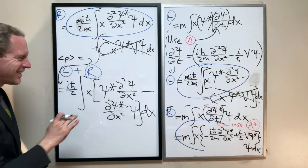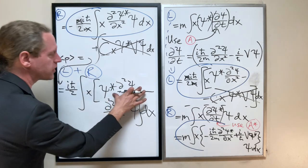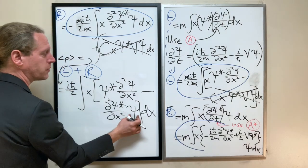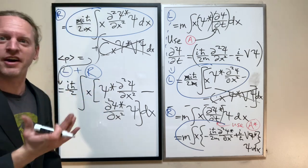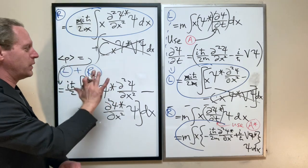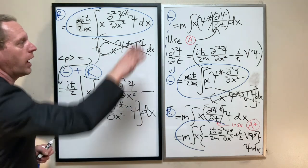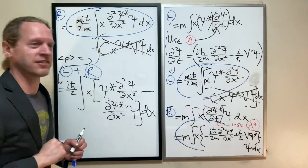Now we have Psi star times second derivative of Psi plus second derivative of Psi star times derivative of Psi. Turns out this thing is another example of an integral that we can kind of simplify. There's a nice easy way to simplify this that you'll see momentarily.